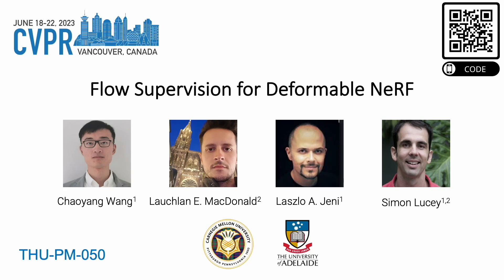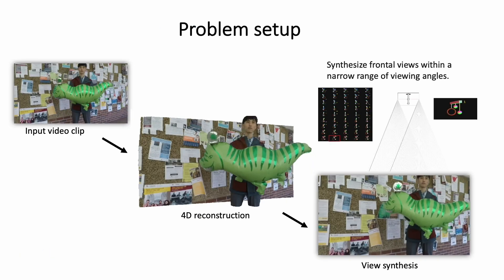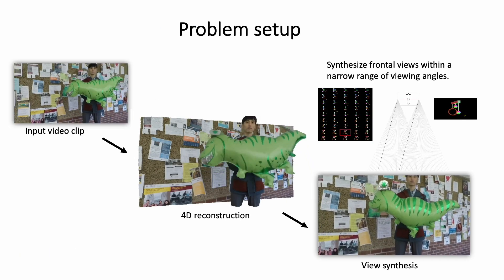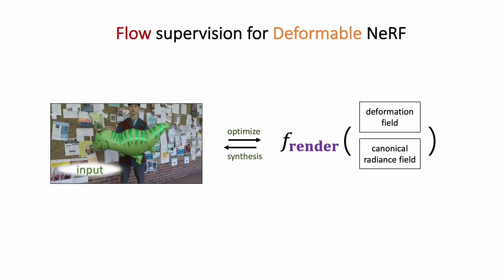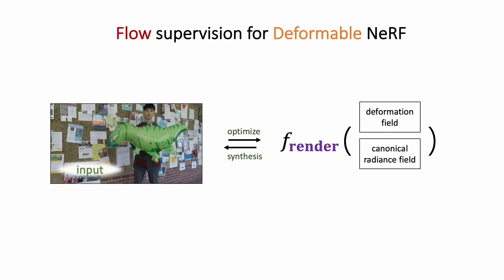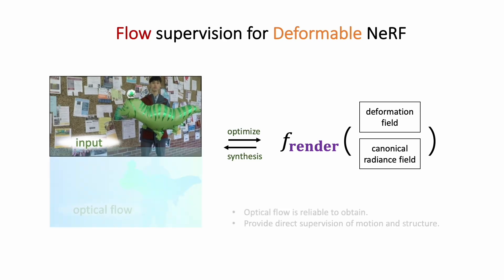We present Flow Supervision for Deformable NeRF, a method focused on synthesizing novel view images for dynamic scenes from monocular videos. Our approach enhances the state-of-the-art deformable neural radiance field by incorporating optical flow supervision.